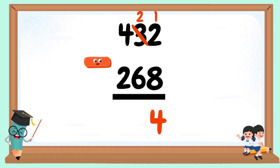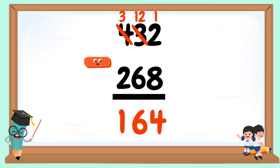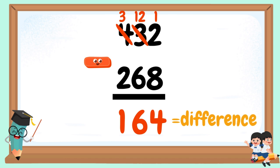6 minus 2 cannot be done, so we need to borrow 1 from 4. The 4 will become 3, and 2 will become 12. 12 minus 6 equals 6. 3 minus 2 equals 1. 164 is our difference.